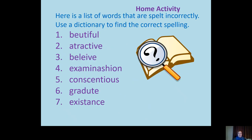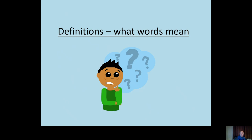Another activity: here's a list of incorrectly spelt words to look up and find the correct spelling. Words like beautiful, attractive, believe, examination, conscientious, graduate and existence. You can look them up in the dictionary. So we're looking at beautiful — are we going to the end or the beginning of the dictionary? Use what you know. Definition is literally what a word means, explaining it in its simplest form.